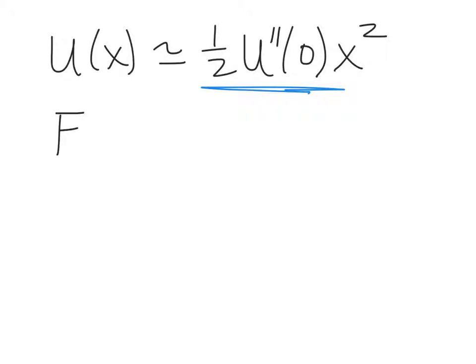Remember, the force can be written as minus the spatial derivative of the potential energy function. We take an x derivative of that potential energy function and we find that we get minus U double prime evaluated at x equals zero times x.